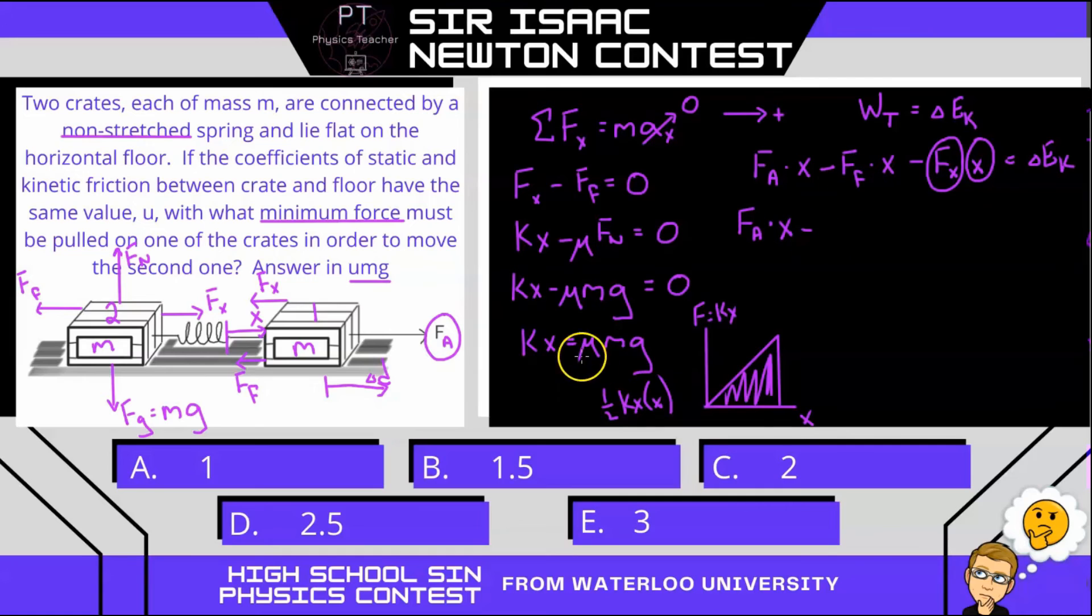So we have F_a times x minus mu mg times x minus one-half kx squared. Our change in kinetic energy is zero because we don't want to change the kinetic energy of block one. We just slightly move it until the spring is stretched enough to move block two, so it's at rest in both initial and final positions.